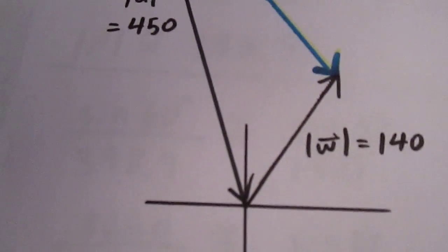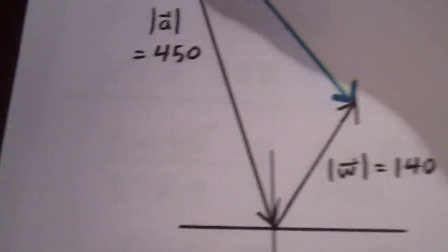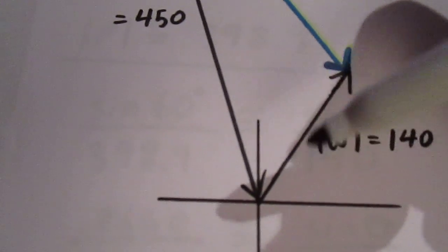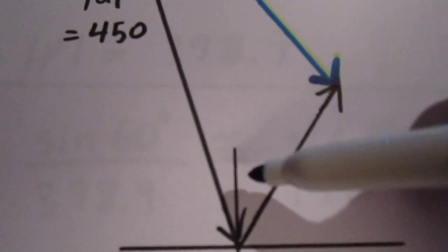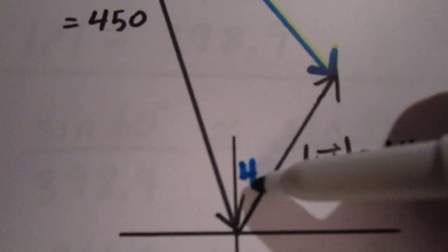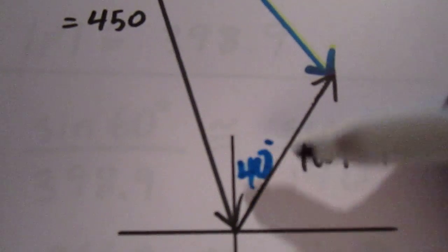We also have a wind. We go tip to tail and we have a wind going at north 40 degrees east. So we put a 40 degree angle here.